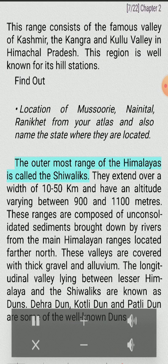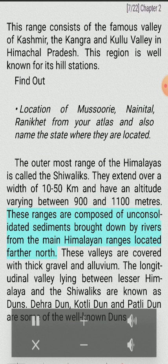The outermost range of the Himalayas is called the Shiwaliks. They extend over a width of 10 to 50 km and have an altitude varying between 900 and 1,100 meters. These ranges are composed of unconsolidated sediments brought down by rivers from the main Himalayan ranges located farther north. These valleys are covered with thick gravel and alluvium. The longitudinal valleys lying between the Lesser Himalaya and the Shiwaliks are known as duns. Dehra Dun, Kotli Dun and Patli Dun are some of the well-known duns.